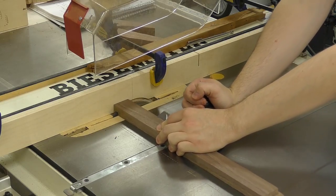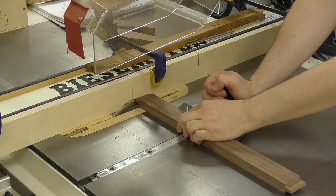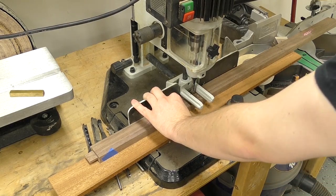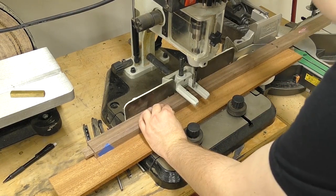Back over at the table saw, I used the dado stack again to cut the tenons for the aprons. And to cut the mortises for the riser blocks, I went back over to the hollow chisel mortiser to remove that waste.